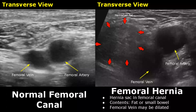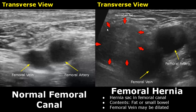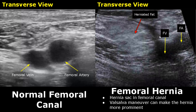Here is an image of the femoral canal in transverse view. We see the femoral artery and vein in cross section. This is a femoral hernia — the hernia sac is found in the femoral canal. This is herniated fat; the femoral vein may be dilated. This is another case of femoral hernia where the herniated fat is found alongside the femoral vein.